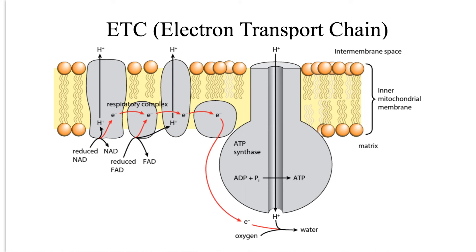Oxidative phosphorylation takes place in the inner mitochondrial membrane. Remember that a mitochondrion has a double membrane — inner and outer — and the inner membrane makes foldings called cristae. The reason the inner membrane, the cristae, makes foldings is to increase the surface area. But for what?